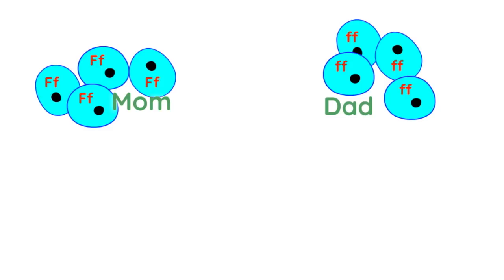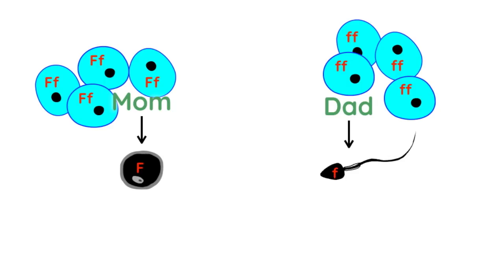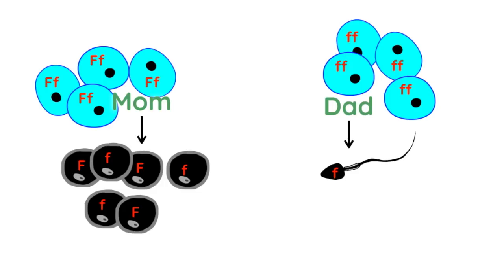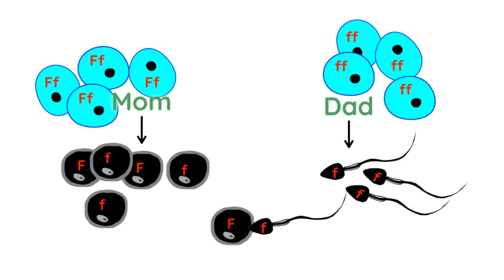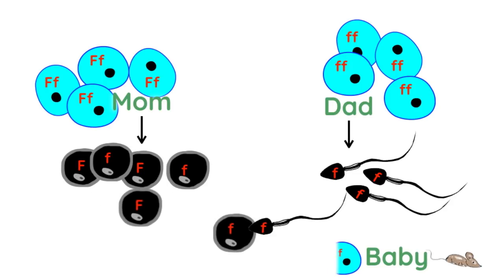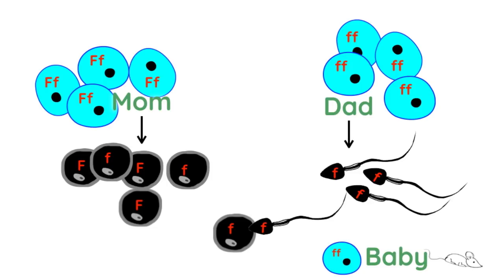Let's look at all of the reproductive cells these parents could produce. The mother could have egg cells with capital F — the brown fur allele — or egg cells with lowercase f, the white fur allele. The father only has lowercase f to donate. One possibility is that a sperm meets an egg with capital F, producing an offspring with brown fur since it has the dominant allele. But there's also the possibility the egg carries lowercase f, giving the baby mouse two lowercase f alleles, resulting in white fur.